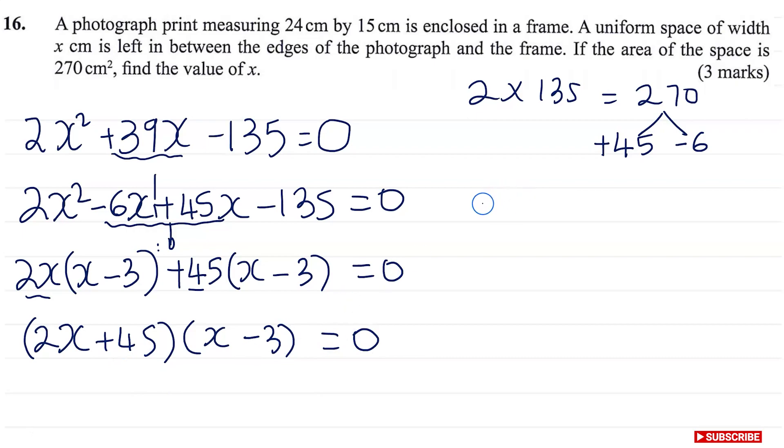So now I can take one of the brackets. Let's take the first one and say 2x plus 45 is equal to 0. Therefore, 2x is equal to negative 45. And therefore, x is equal to negative 45 over 2. And then I now can take the second bracket and I say, x minus 3 is equal to 0. Therefore, x is equal to 3.